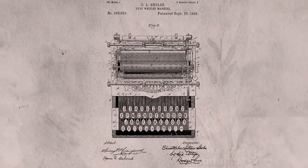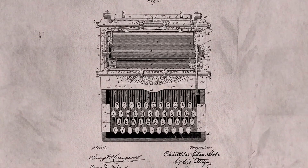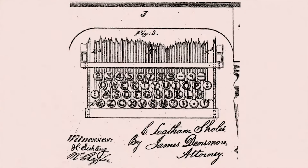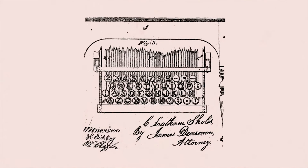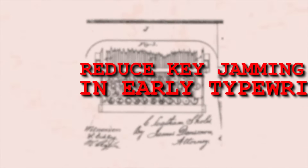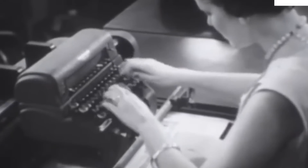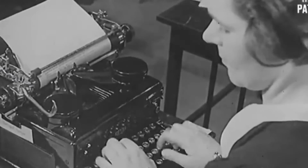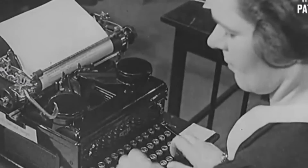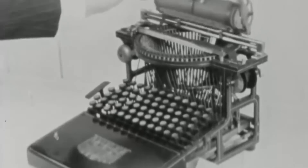It would have been known as the QWERTY and had a layout about like this. Popular legend suggests that Scholes landed on this design based on the need to reduce key jamming in early typewriters. It was thought that he laid out the keys in a way that allowed common letter sequences to be typed in rapid succession without a mechanical jam in the typewriter arms.